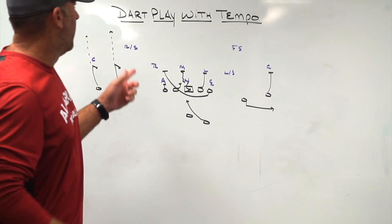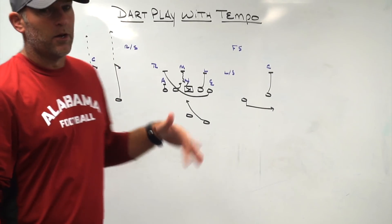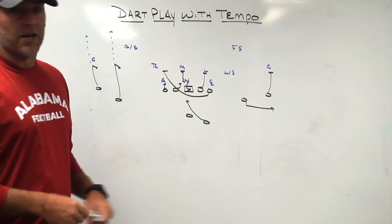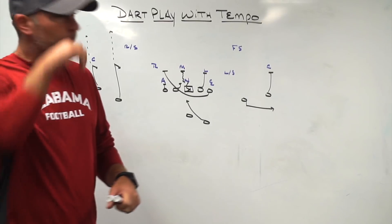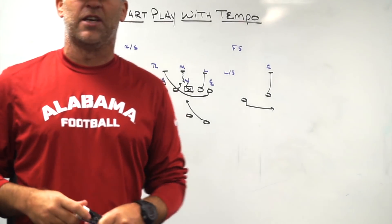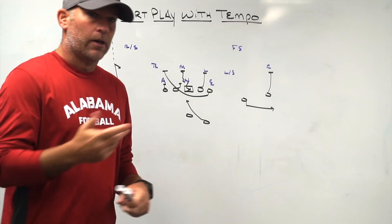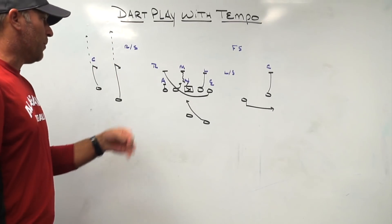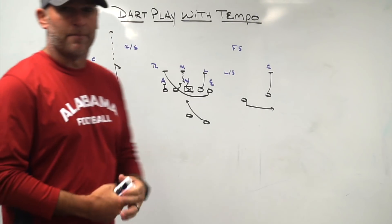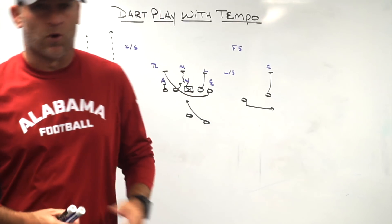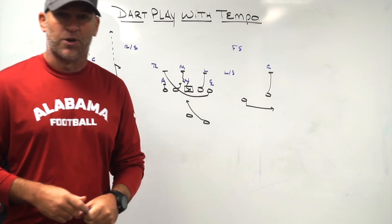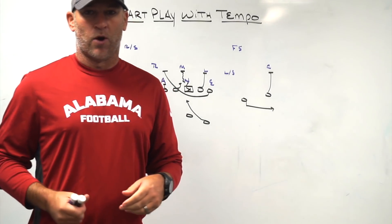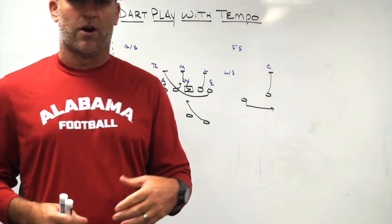Today we're going to take a look at how we use our dart play within our tempo package. The dart play isn't anything new — it's tackle wrap. Old-fashioned guys, wing tee guys, single wing guys used to run tackle trap. Dart is tackle wrap, which means the tackle will be up on a linebacker. It basically creates an ISO scheme, which is one of the reasons I decided to use it this year — because it created more of an ISO scheme where we could still read somebody and keep it in our option principles.